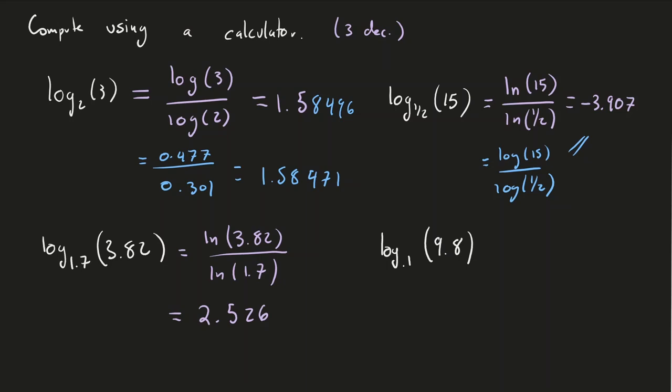In this last one here, I'll do a common log. So this is log of 9.8 divided by log of 0.1, which actually we know is negative 1. So doing log of 9.8 divided by log of 0.1, that is equal to negative 0.991.